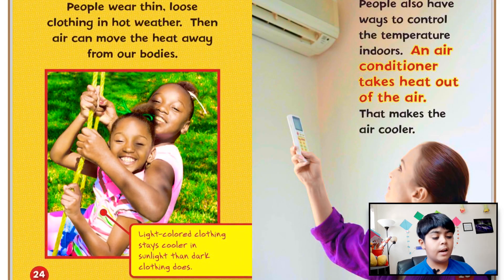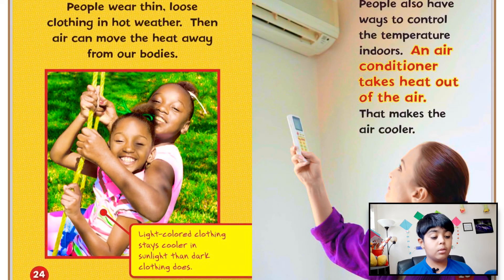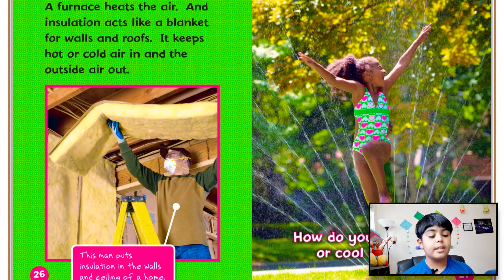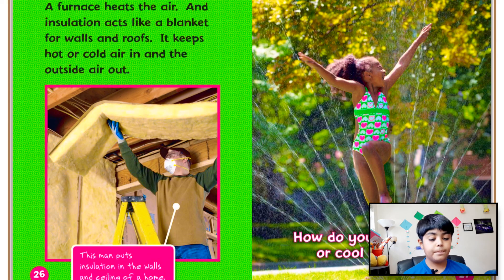People also have ways to control the temperature indoors. An air conditioner takes heat out of the air, making the air cooler. A furnace heats the air. Insulation acts like a blanket for walls and roofs — it keeps hot or cold air in and the outside air out. As you can see in the picture, this man puts insulation on the walls and ceiling of a home.